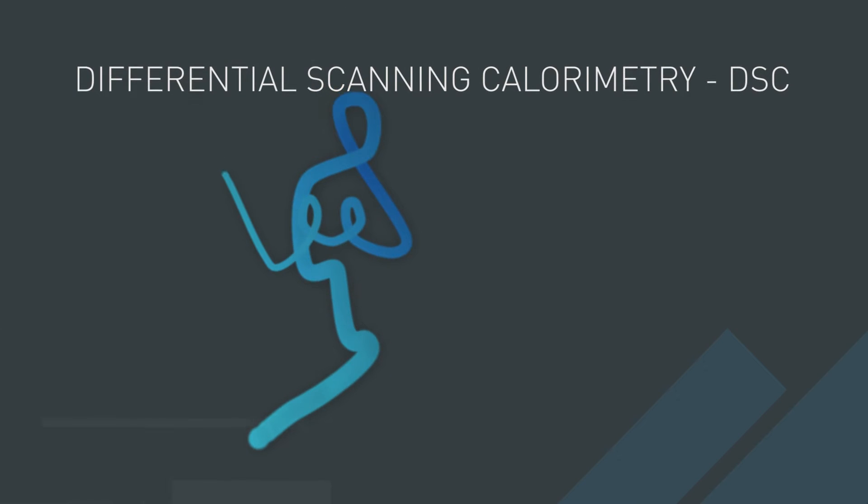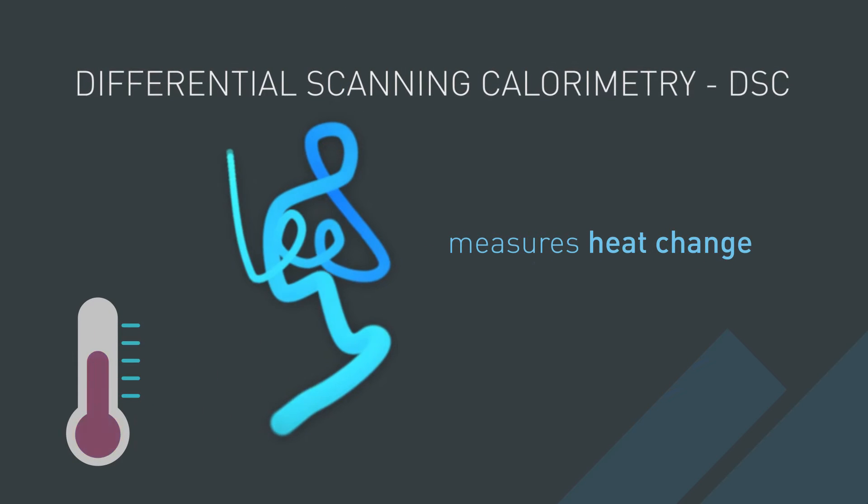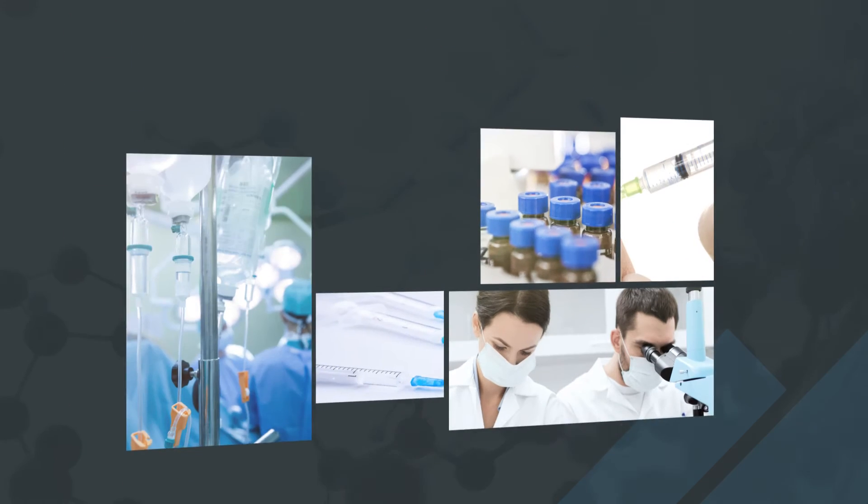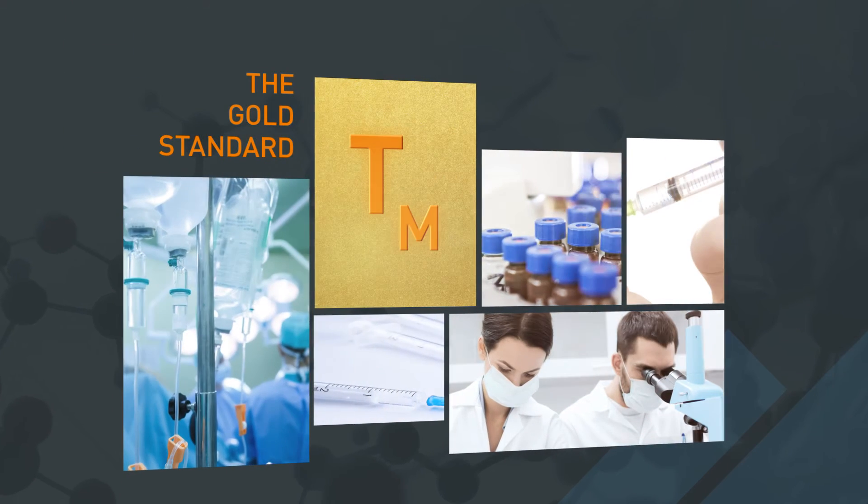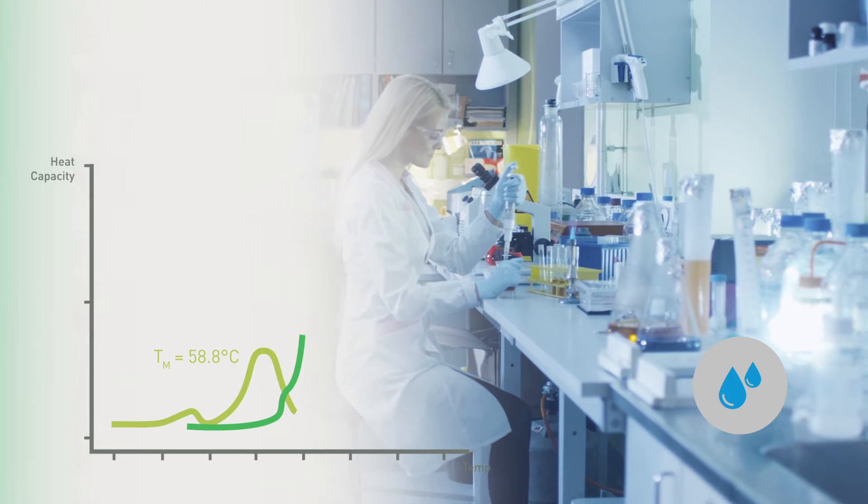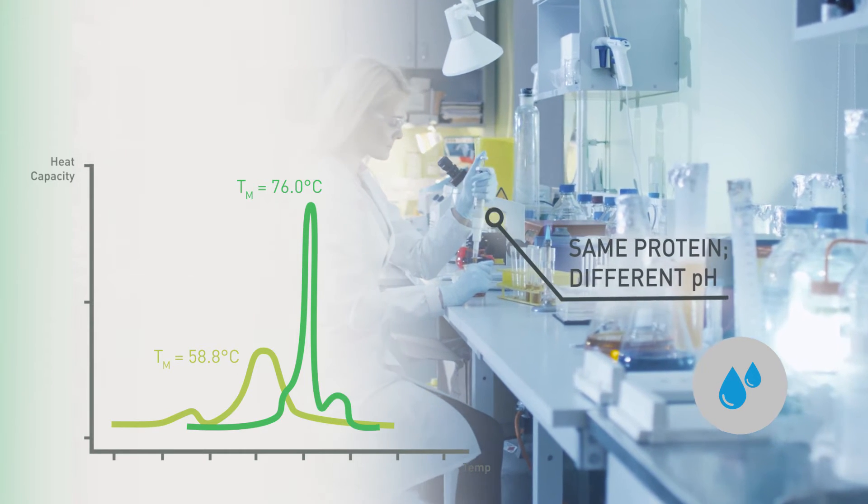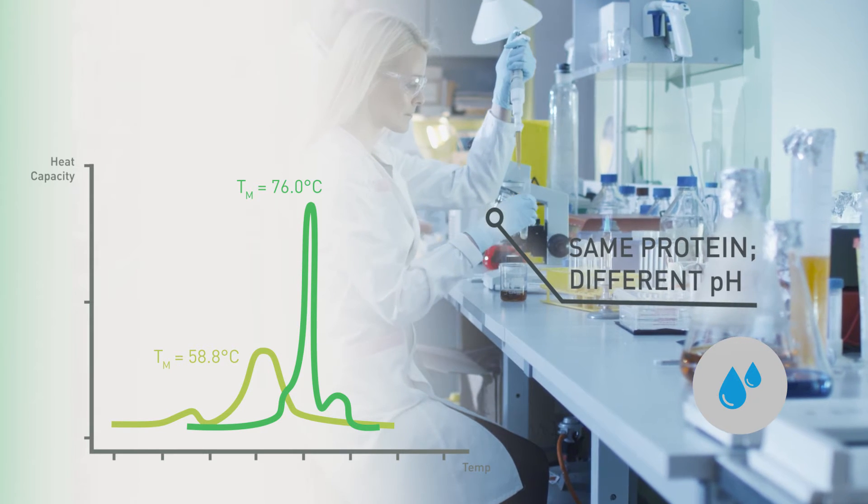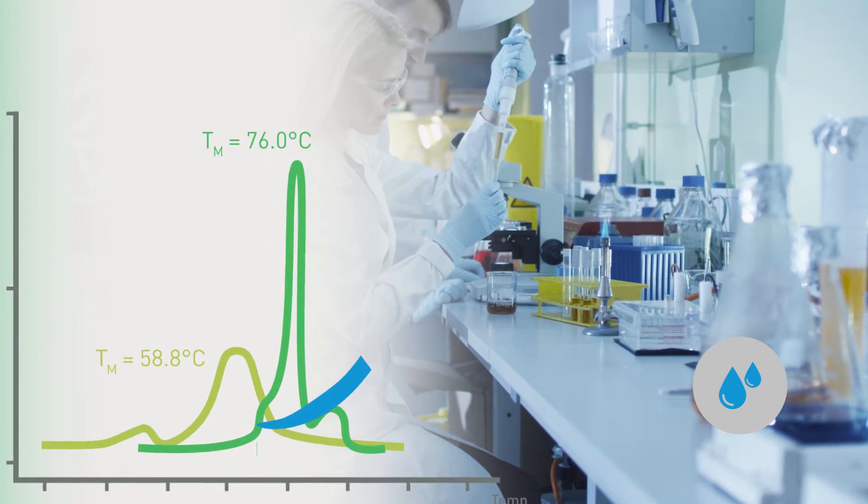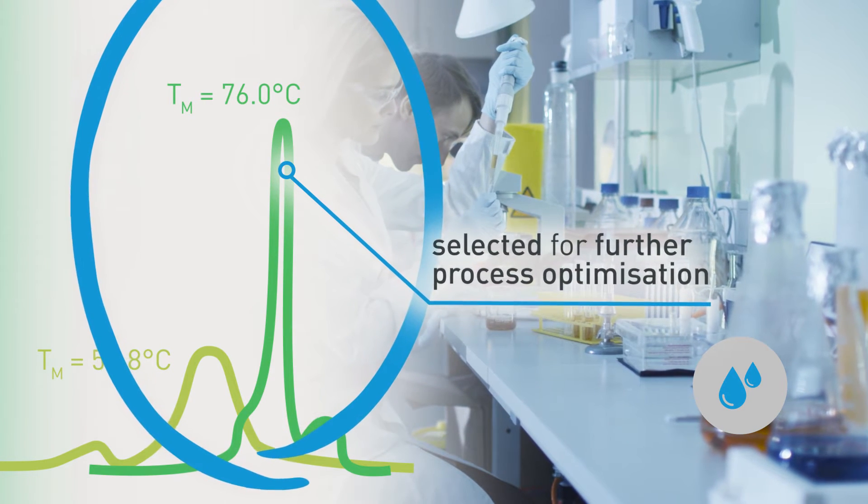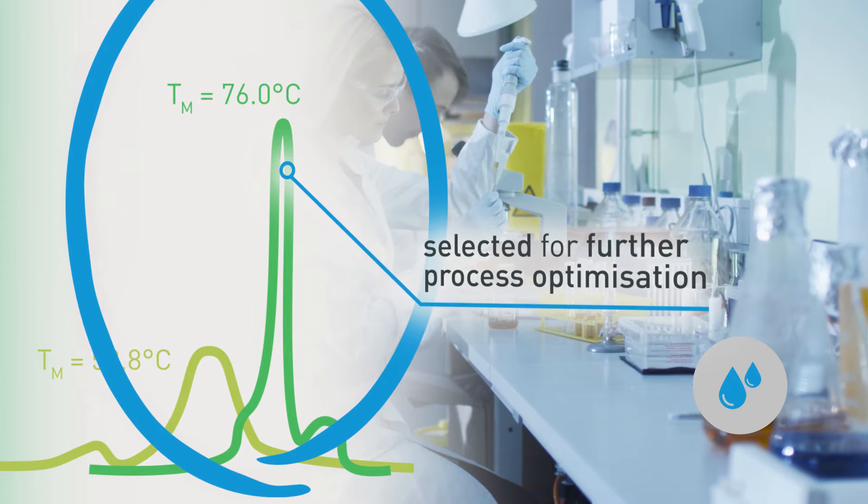DSC works by measuring the heat change of protein unfolding during thermal denaturation. DSC is universally considered the gold standard for measuring the TM of proteins in solution. It quickly and accurately measures the TMs of the same protein in different process conditions. The conditions with higher TMs from DSC indicate the conditions for further study and are used to optimize the process, as well as reduce manufacturing costs.